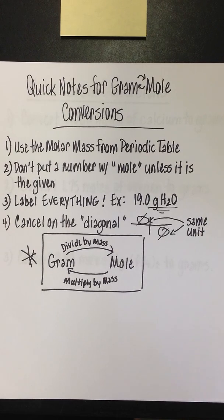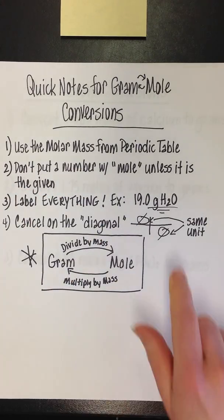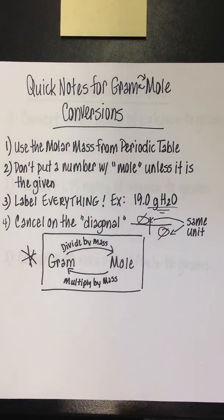Again, make sure we label everything, and the name of the game is to cancel out on the diagonal, meaning whatever is on the top is always on the bottom in the next step, and by that I mean the unit.